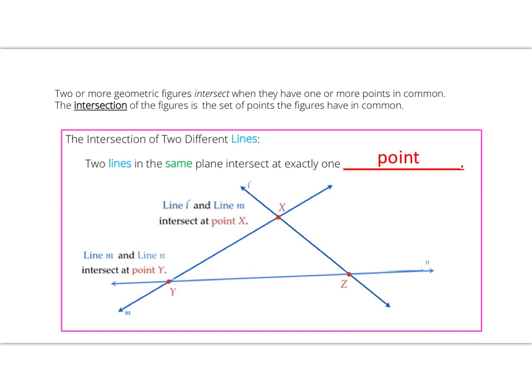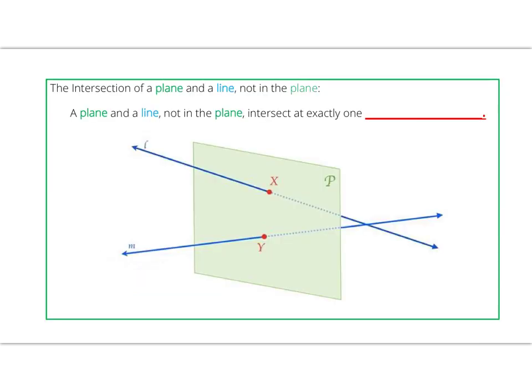Our final example: we have line L and line N intersecting at point Z.